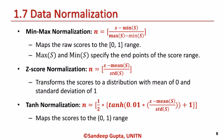Z-score normalization is the most commonly used technique, which is calculated using the arithmetic mean and standard deviation of the given data. However, both mean and standard deviation are sensitive to outliers, and this technique does not guarantee a common numerical range for the normalized scores. Moreover, if the input scores are not Gaussian distributed, this technique does not retain the input distribution at the output.